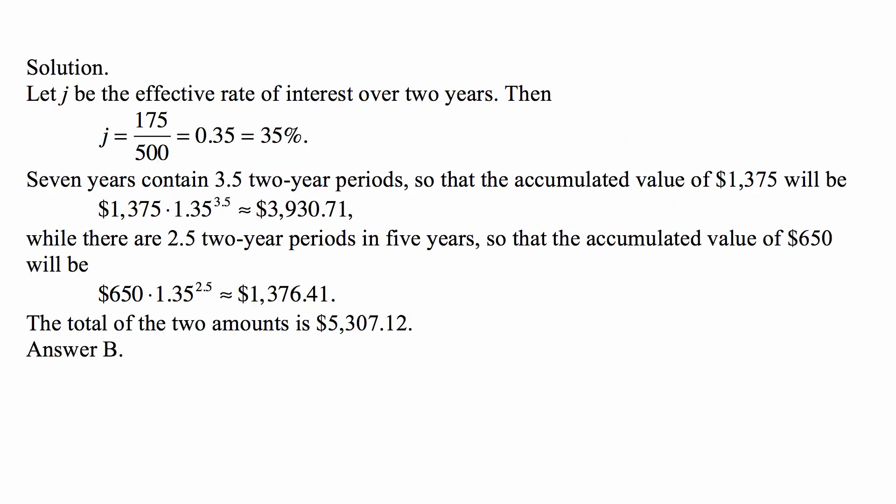Let us write J for the effective rate of interest over two years, so we're switching to a two-year period as a unit of time. Then J is $175 over $500, or 0.35 — 35% — that's how much interest you earn on $500 in two years.